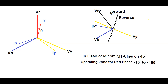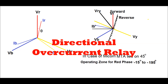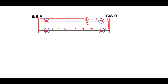Hello friends, today I will discuss directional overcurrent relay in case of transmission line protection. Consider two substations, substation A and substation B. There exists one parallel line, that is two feeders connected from substation A to substation B.